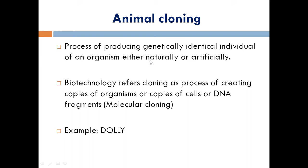The next topic is animal cloning. Cloning means producing an exact copy of a particular animal — that exact copy is called a clone. This can be done with the help of recombinant DNA technology. It is the process of producing genetically identical individuals of an organism either naturally or artificially. Natural methods involve normal fertilization, while artificial methods involve artificial insemination. In biotechnology, cloning refers to creating copies of organisms, cells, or DNA fragments — also called molecular cloning.